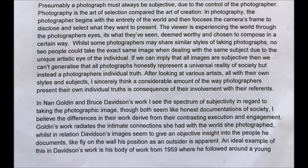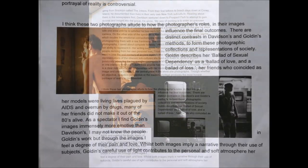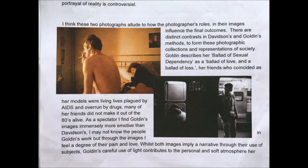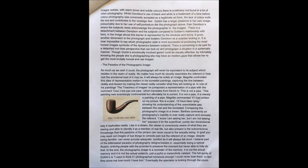The student writes: 'In Nan Goldin and Bruce Davidson's work, I see the spectrum of their subjectivity in regard to taking the photographic image. Though both seem like honest documentations of society, I believe the differences in their work derive from their contrasting execution and engagement. Goldin's work radiates the intimate connections she had with the world she photographed, whilst in relation Davidson's images seem to give an objective insight into the people he documents. Like a fly on a wall, his position as an outsider is apparent.' Bringing in writers on photography such as Roland Barthes and Susan Sontag, and relating their ideas to other artists who have investigated the paradox of images such as René Magritte, the student constructs an argument that is highly articulate, creative and original.